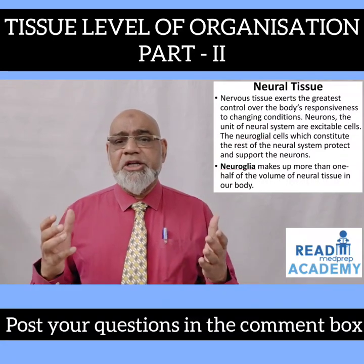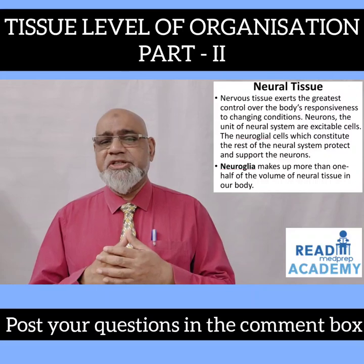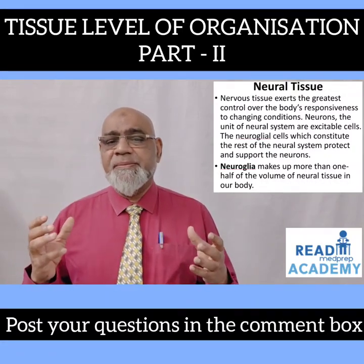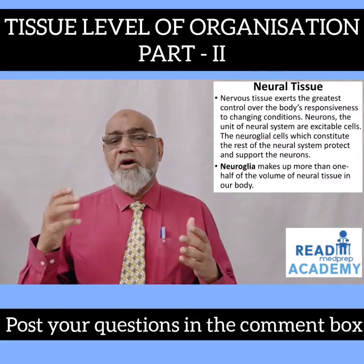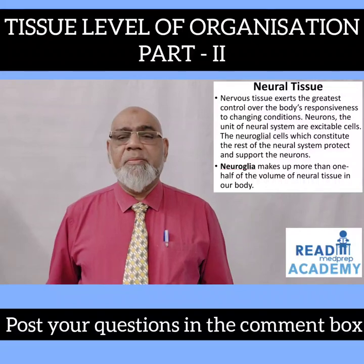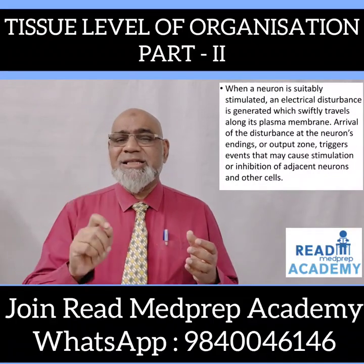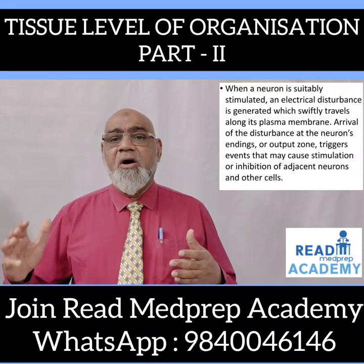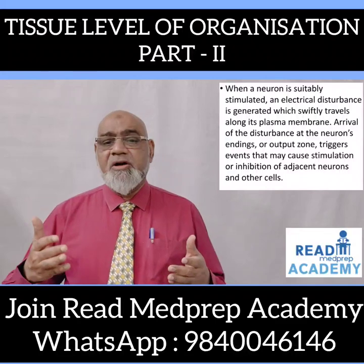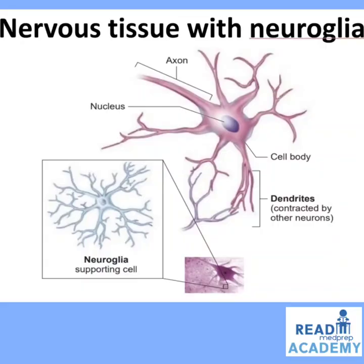Neural tissue exerts the greatest control over the body's responsiveness to changing conditions. Neurons, the unit of the neural system, are excitable cells. Neuroglial cells protect and support the neurons and make up more than half the volume of neural tissue. When a neuron is suitably stimulated, an electrical disturbance is generated that travels along its plasma membrane, and arrival at the neuron's endings triggers stimulation or inhibition of adjacent neurons and other cells. The neuron has a cell body with a nucleus, a long fiber-like axon, and multiple branches called dendrites.